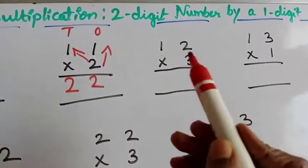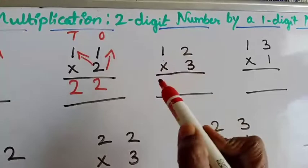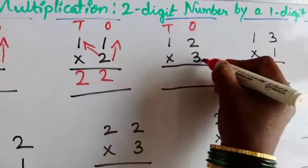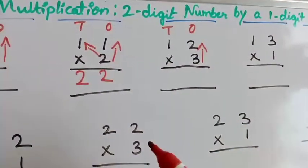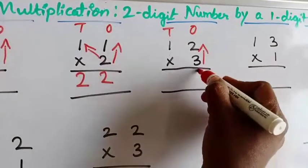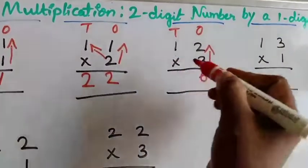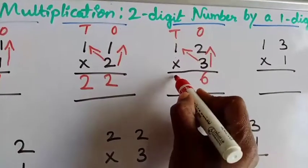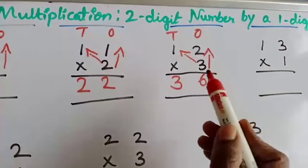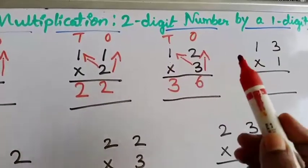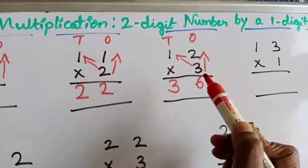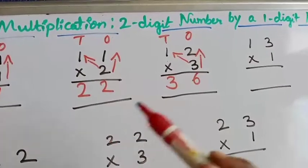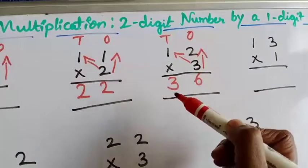The next example is 12 into 3. Write the 1's place and 10's place, then put the arrow mark down to up. 3 two's are 6. Next, from the 1's place to the 10's place, we cross and multiply: 3 one's are 3. When we put the arrow mark, it gives a very clear view of which numbers to multiply. So, 3 two's are 6 and 3 one's are 3. The answer is 36.